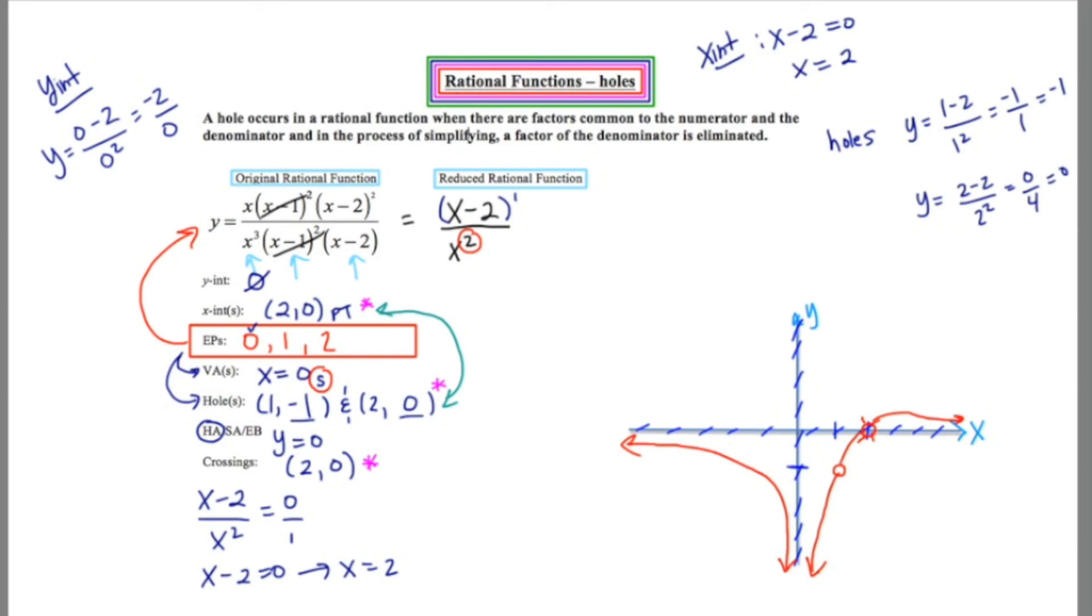To conclude, I'm going to label everything. And your teacher is going to be very happy if you do this. Because your poor teacher has to grade tons of these graphs and it becomes a challenge to look at them over and over again. So this is x equals zero. This here is y equals zero. This is a hole at (2, 0). And there's another hole at (1, -1).